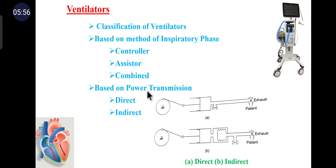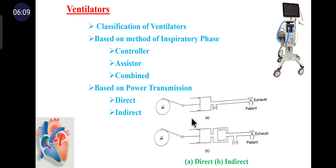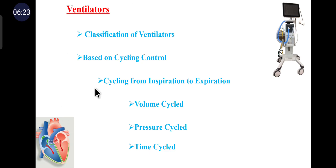Classification based on power transmission includes direct and indirect power transmission. Direct power means the ventilator delivers gas directly from the source or compressor to the patient. Indirect power means the ventilator has separate patient and power systems, where the pressure in the power system determines the flow rate.